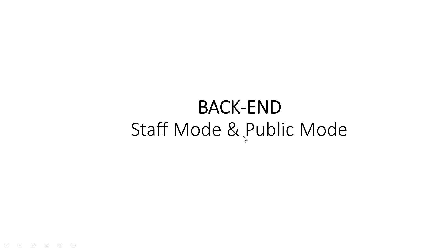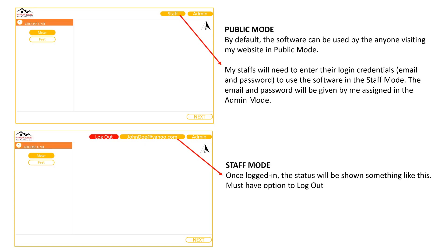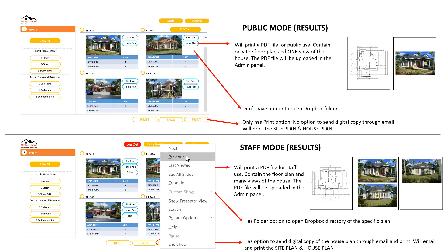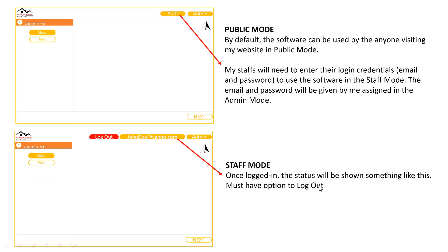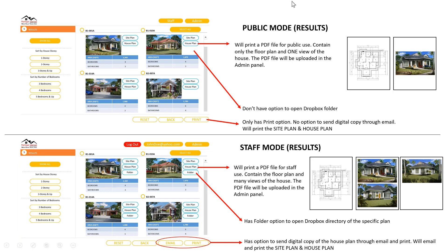Now let me show the difference between staff mode and public mode. In the staff mode, when I log in, the status will be shown. In the public mode, they don't need to click any login — they can just use the software straight away. One difference is that in the staff mode I have the house plan folder button connected to the Dropbox directory, but in the public mode there is no folder — they cannot access the Dropbox folder and that button is not available to them.